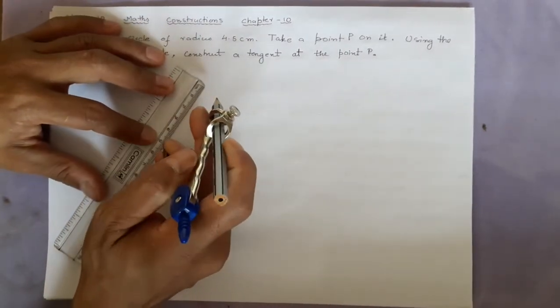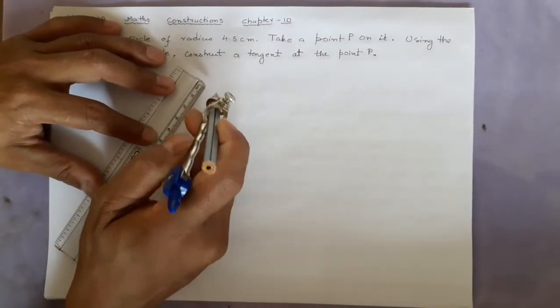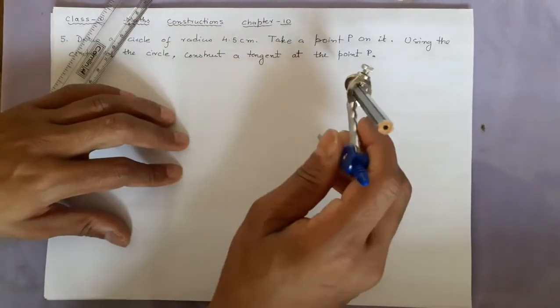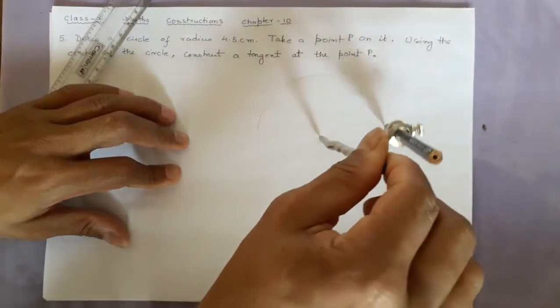Take 4.5, the length of the radius, and draw the circle.